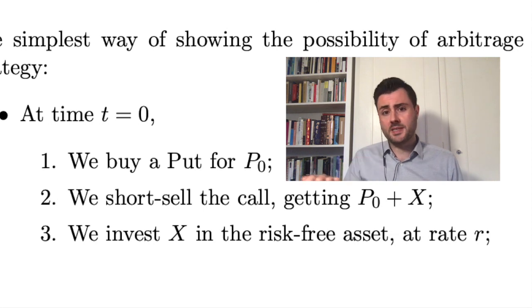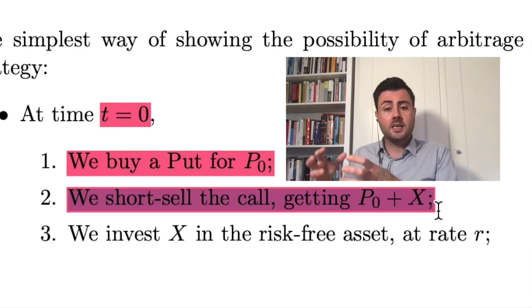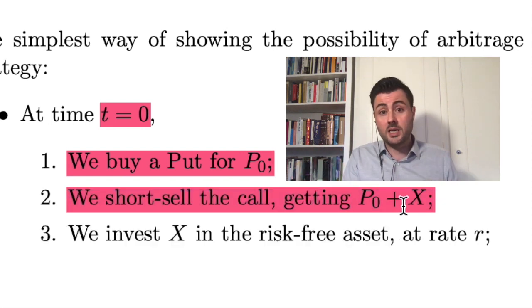If we violate the put-call parity, for example assuming C_0 = P_0 + x where x > 0, we can build an arbitrage. At time 0, we short-sell one unit of the call option, receiving P_0 + x. This is the assumed value, so C_0 = P_0 + x. With P_0, we buy one unit of the put, and the quantity x is invested in the risk-free asset.